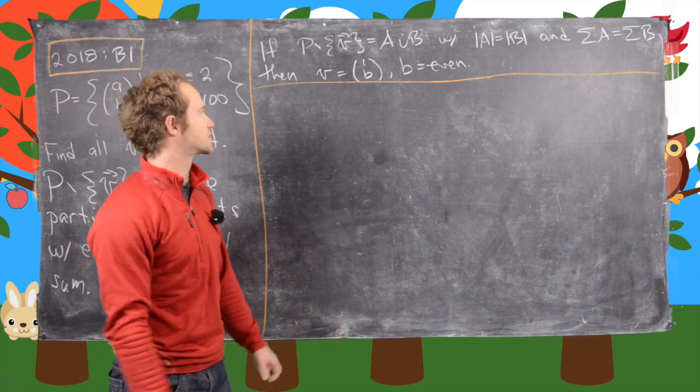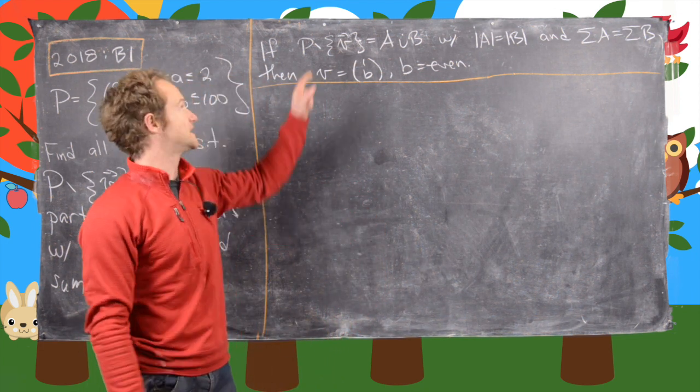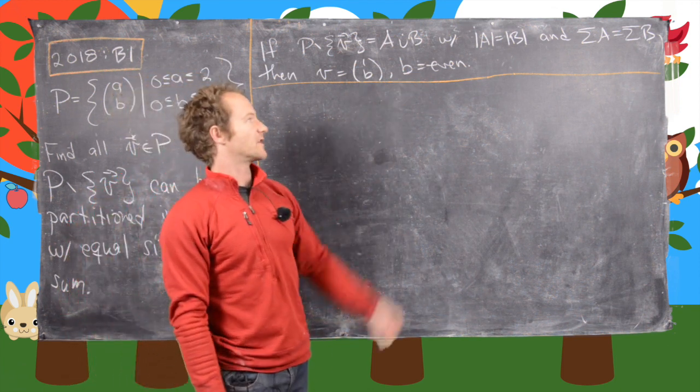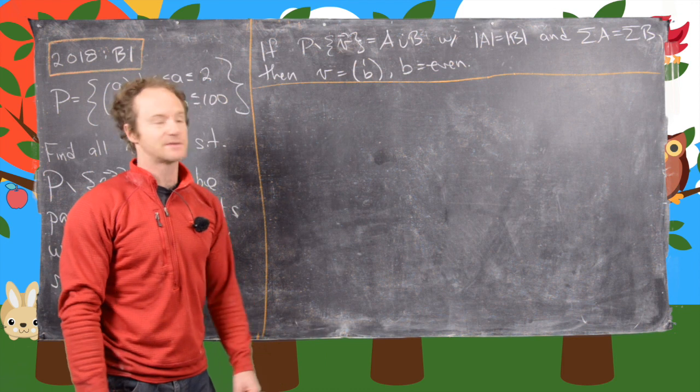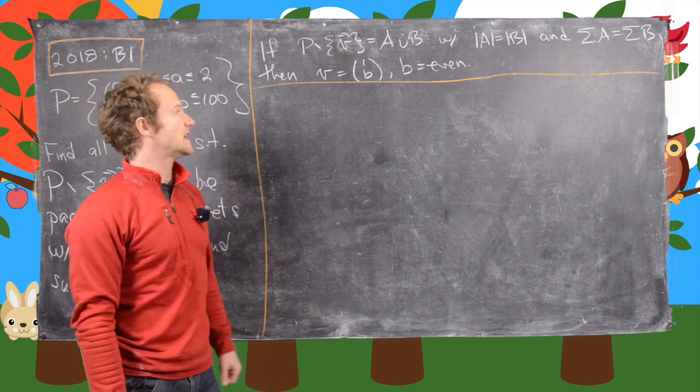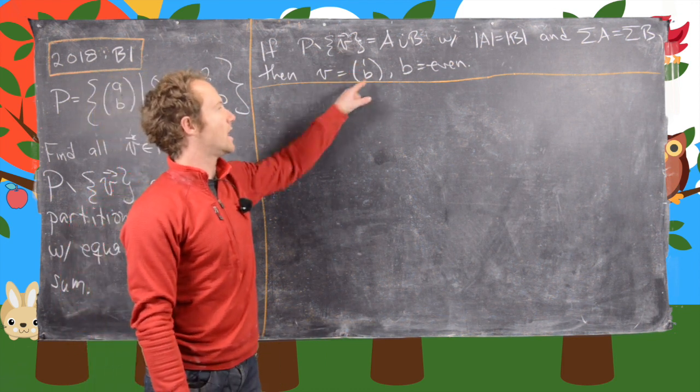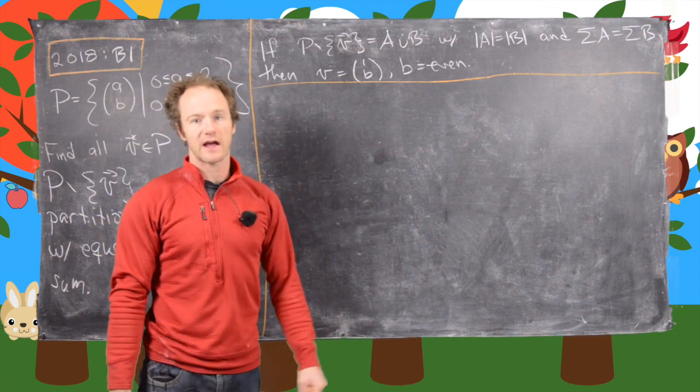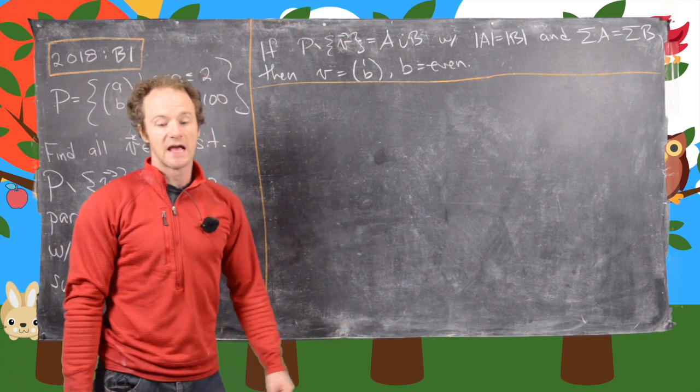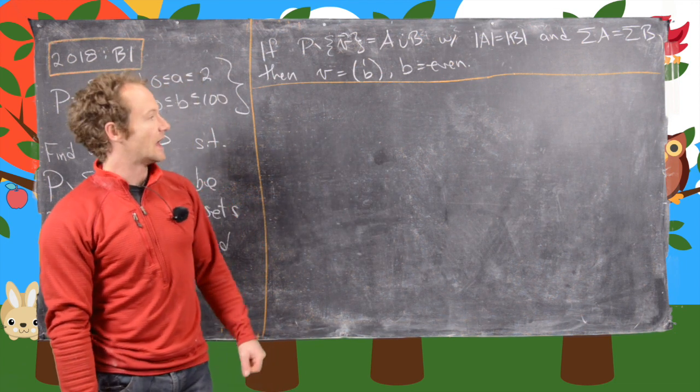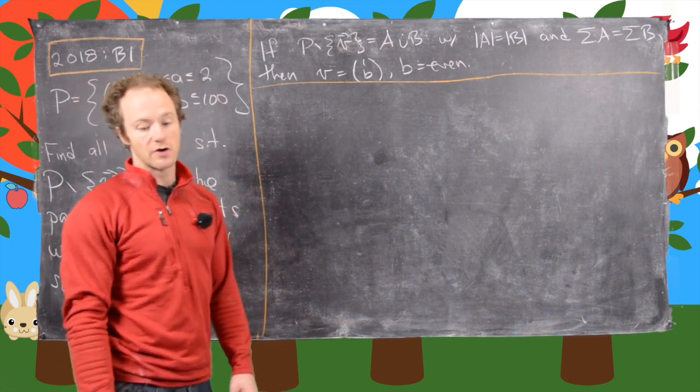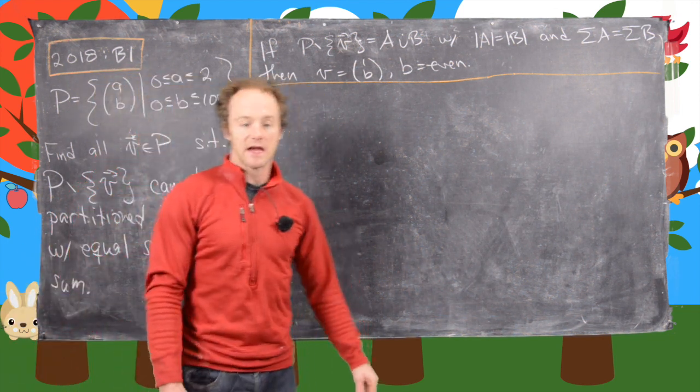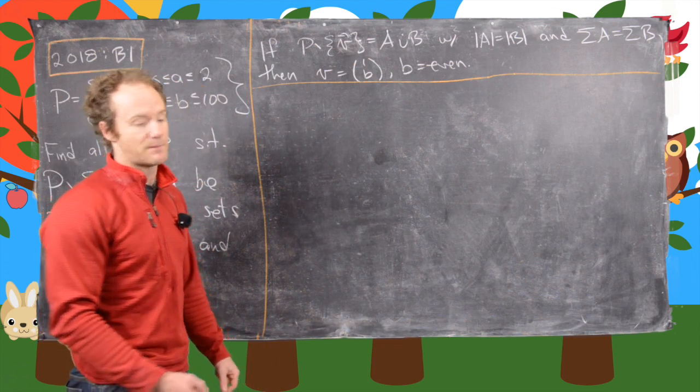So far we've established the following: if we can partition P minus vector V into A union B, where they're the same size and same sum, then we know V equals (1,B) where B is even. Now we want to see if it's possible to create a partition for every such V, and it is possible. The first thing to notice is that we can take all vectors in P and write them as follows in pairs.